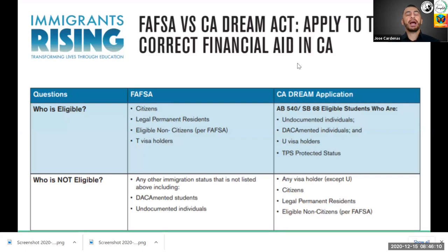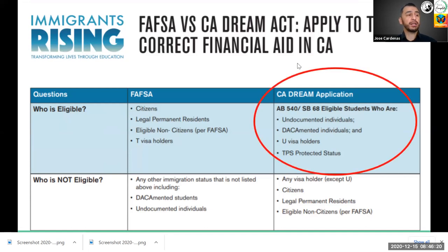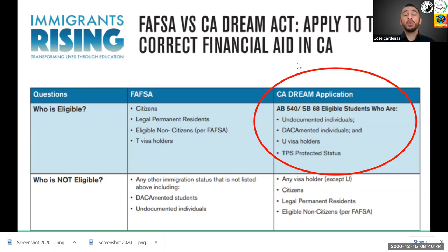For the California Dream Act, there are two different qualifications: one for the FAFSA and one for the California Dream Act. For the sole purposes of the California Dream Act, students who qualify under AB 540 or SB 68 — known as undocumented students or DACA students — will apply. They can also be U visa holders or TPS protected status. We want to make sure that students file one, not both.